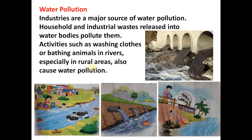In rural areas, people go to the river to wash clothes, bathe animals, and bathe themselves — this also pollutes the river water. In urban areas, household activities and waste released from industries pollute the water bodies.